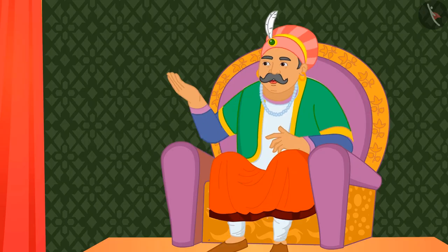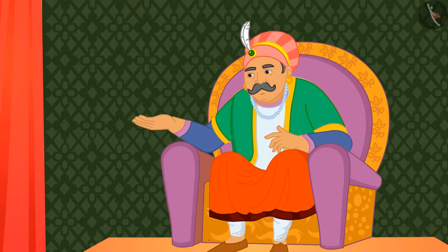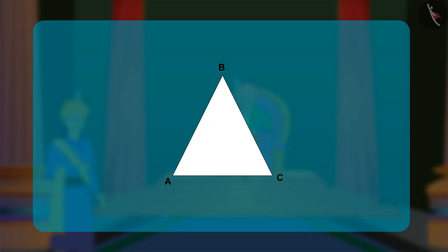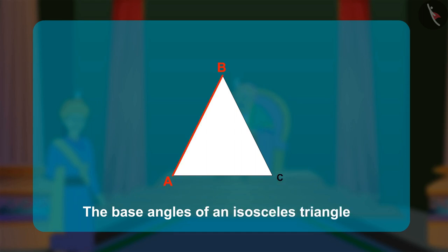What about the base angles of an isosceles triangle, asked Akbar. Birbal created an isosceles triangle ABC in which AB is congruent or equal to BC. He folded the paper in such a way that BD is perpendicular to AC.